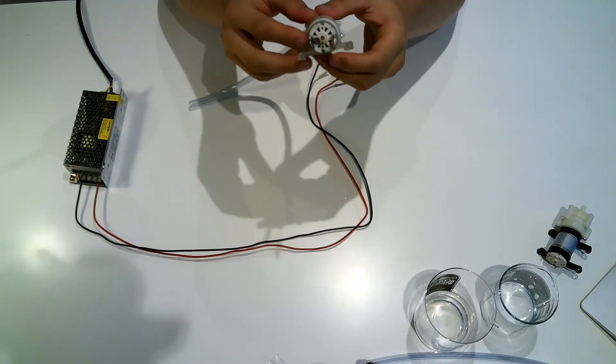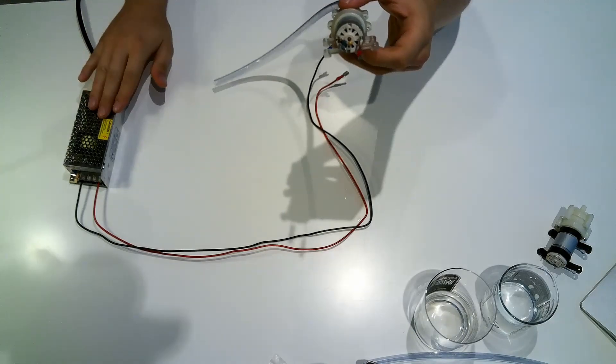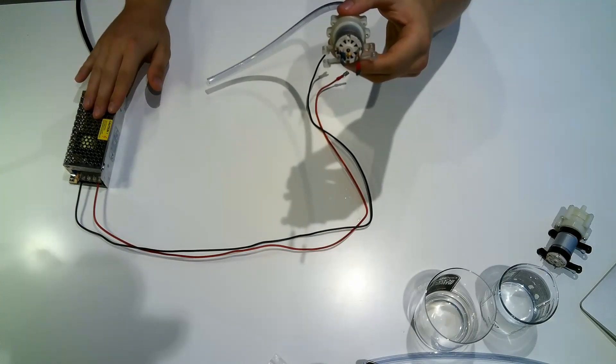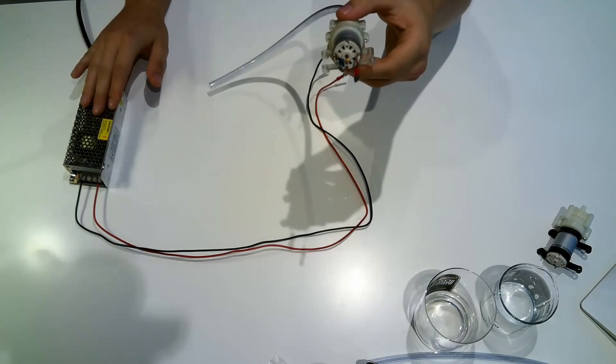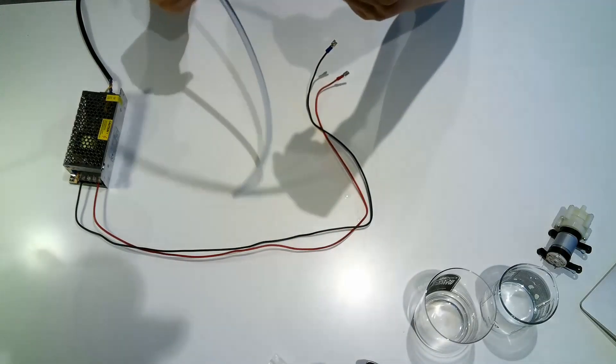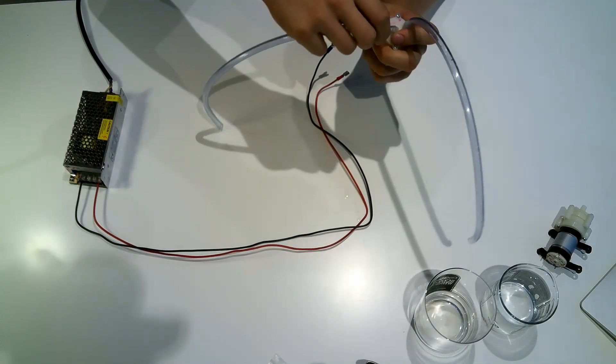And now we will test the flow rate. I'm using a 12-volt, 10-ampere power supply. You can also find this in the description if you want. As you can see, I connected tubes without any clamps. Now we will connect the other tube.